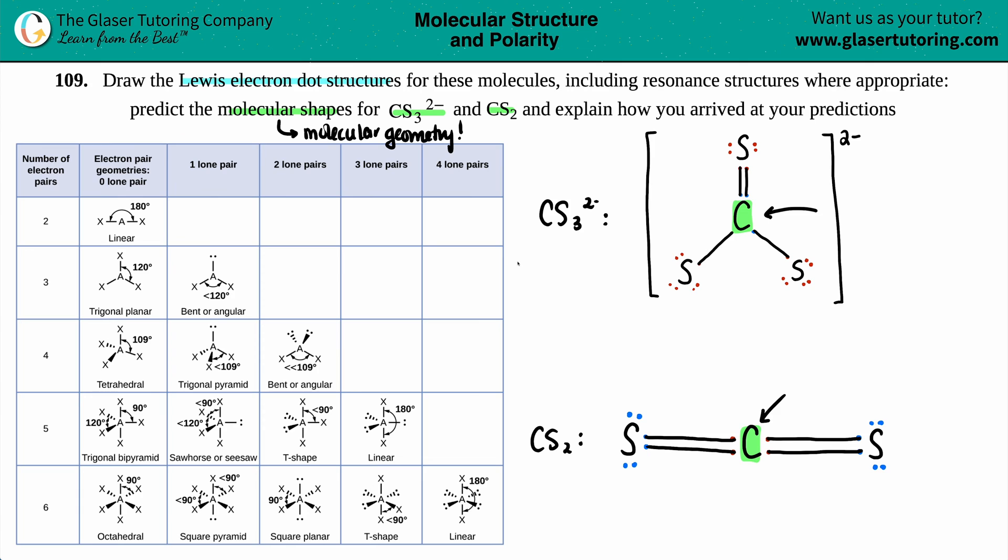Now, when you're trying to find out your molecular shapes, the thing that really is important is we have to know how many total atoms and electron pairs there are around the central atom. Nobody cares about the atoms that are around the central atom. It's always coming from the central atom. So how many atoms are bound to this carbon in CS₃²⁻? We got a sulfur, we got another sulfur, and we got another sulfur. So in this case, we have three atoms. And in this case, we got two atoms, right? Because the carbon is bound to the two sulfurs. So two atoms.